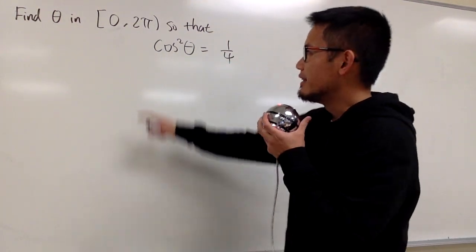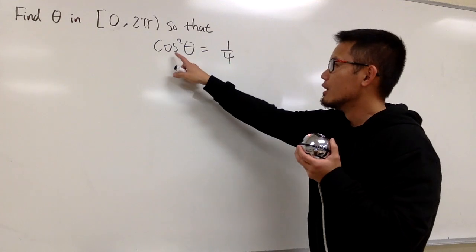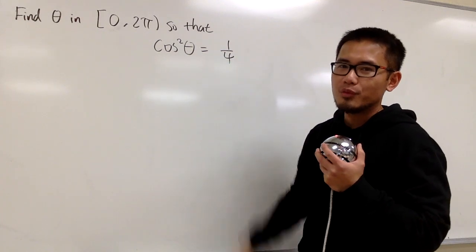We are going to find the angle theta, and the angle is in between 0 to 2π, and we also want to have cosine squared theta to be 1 over 4.